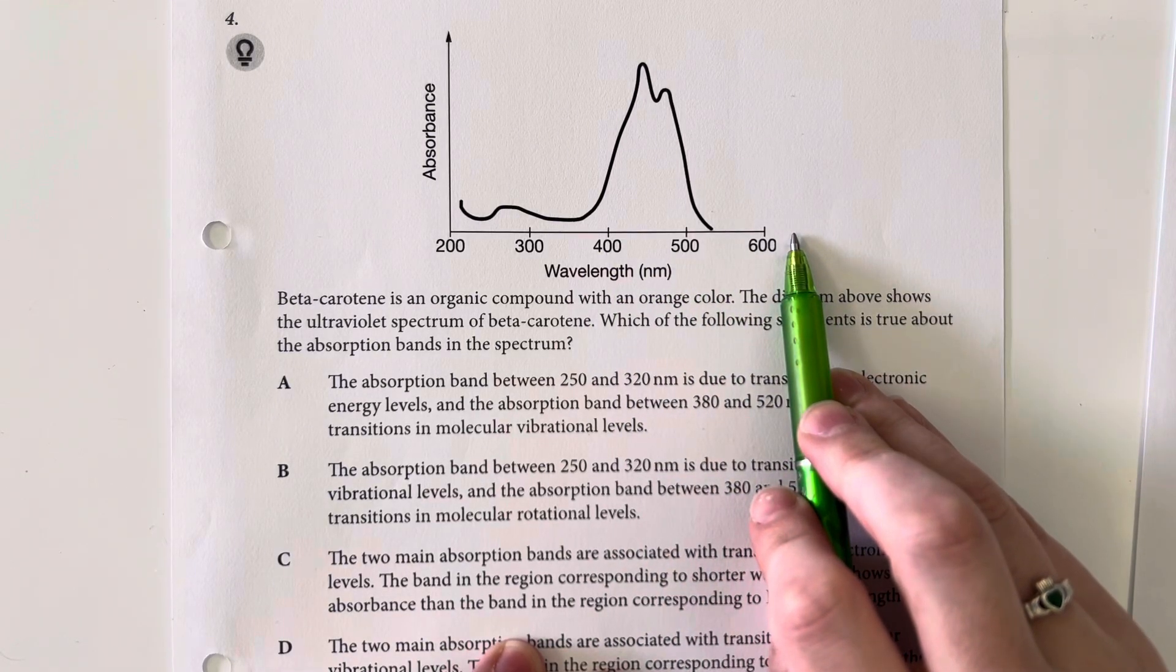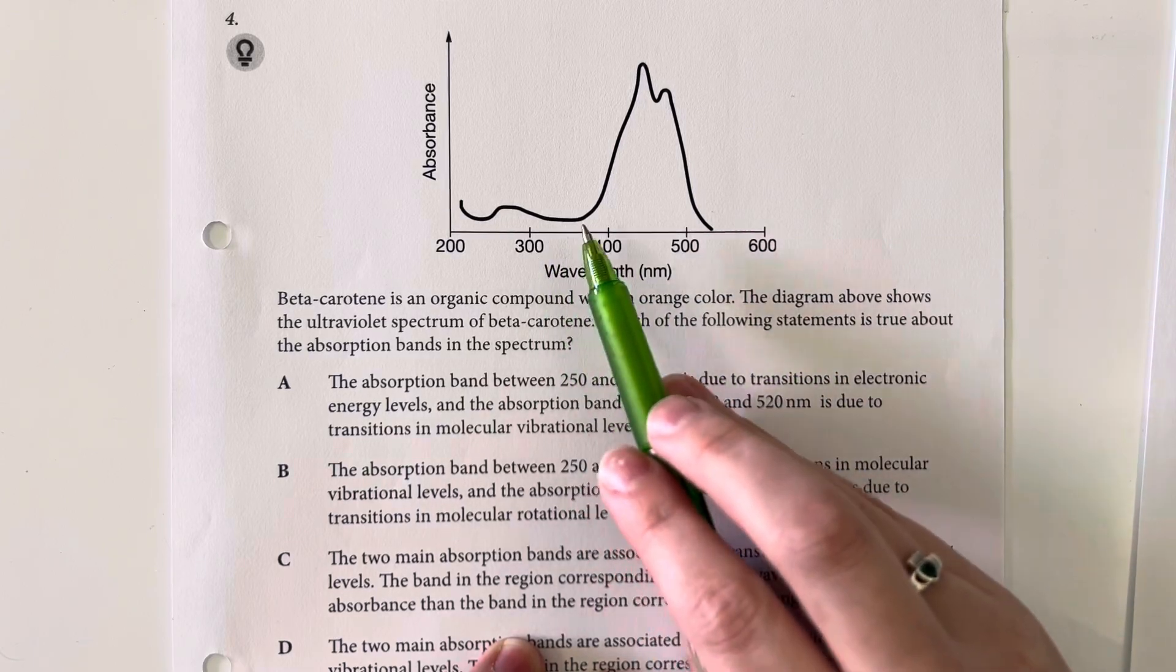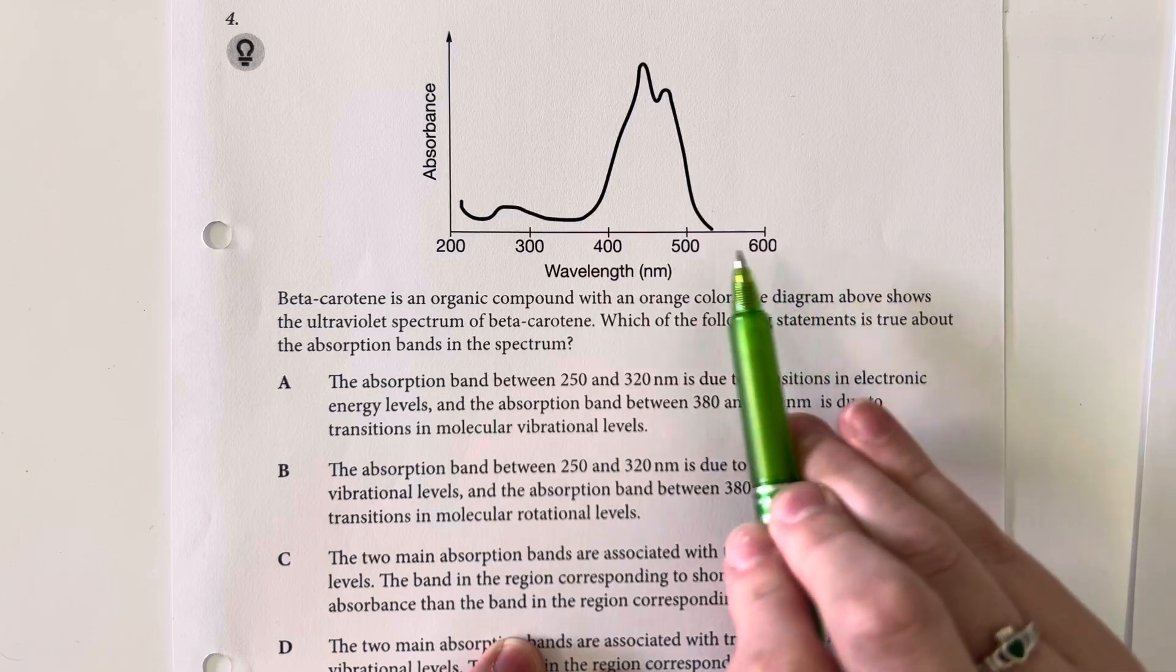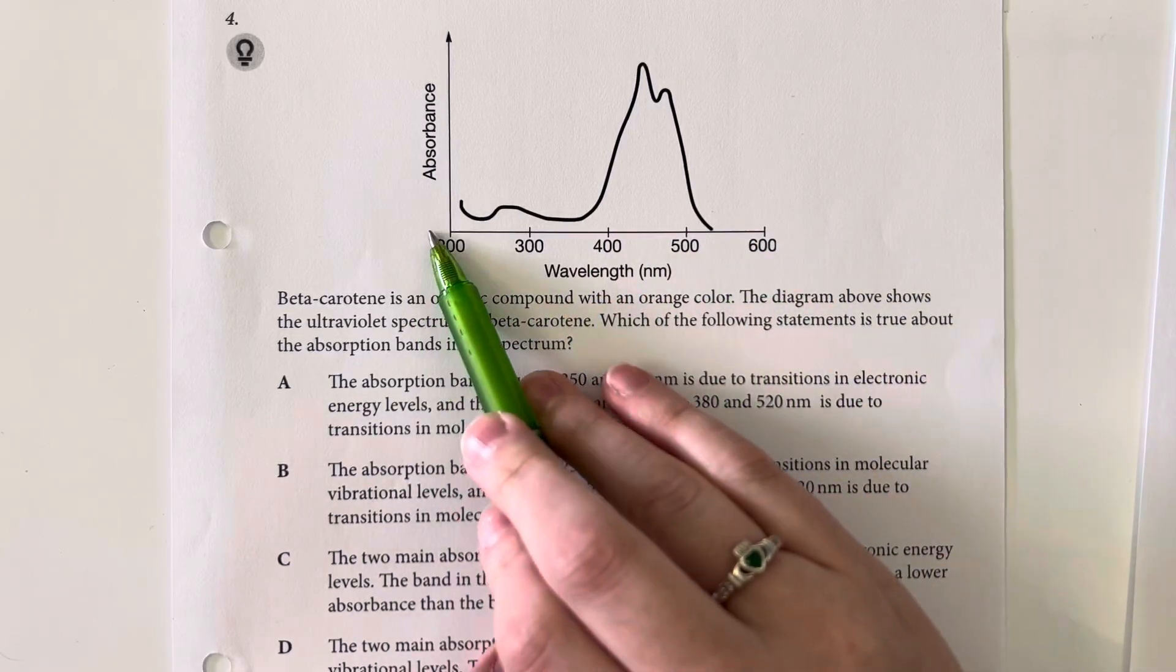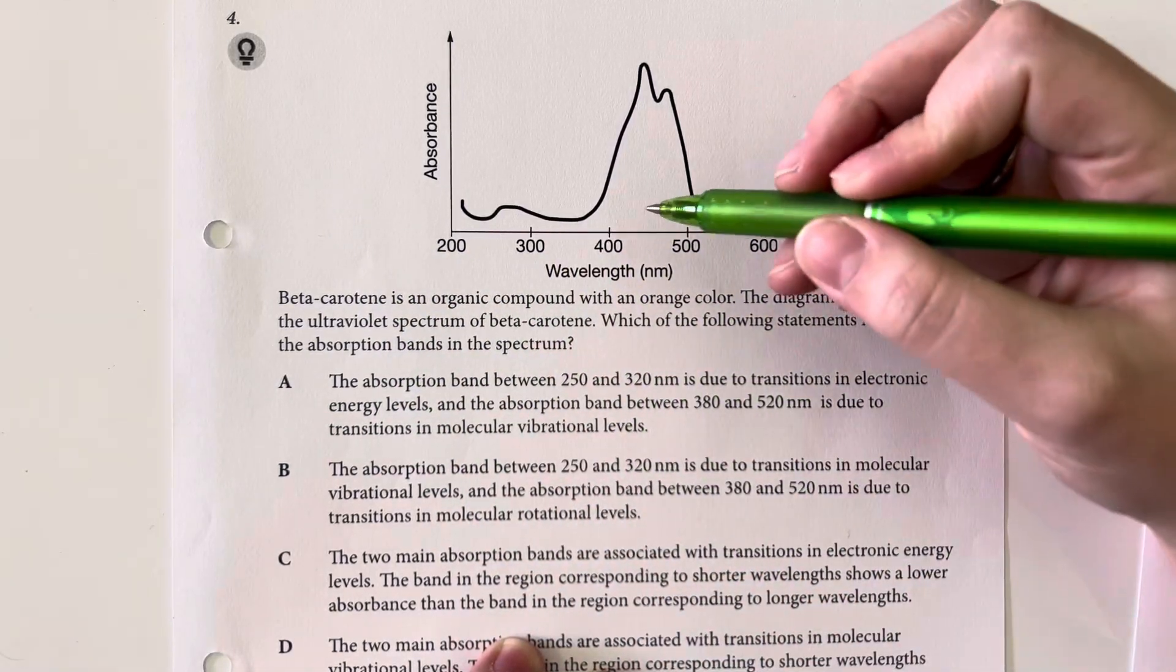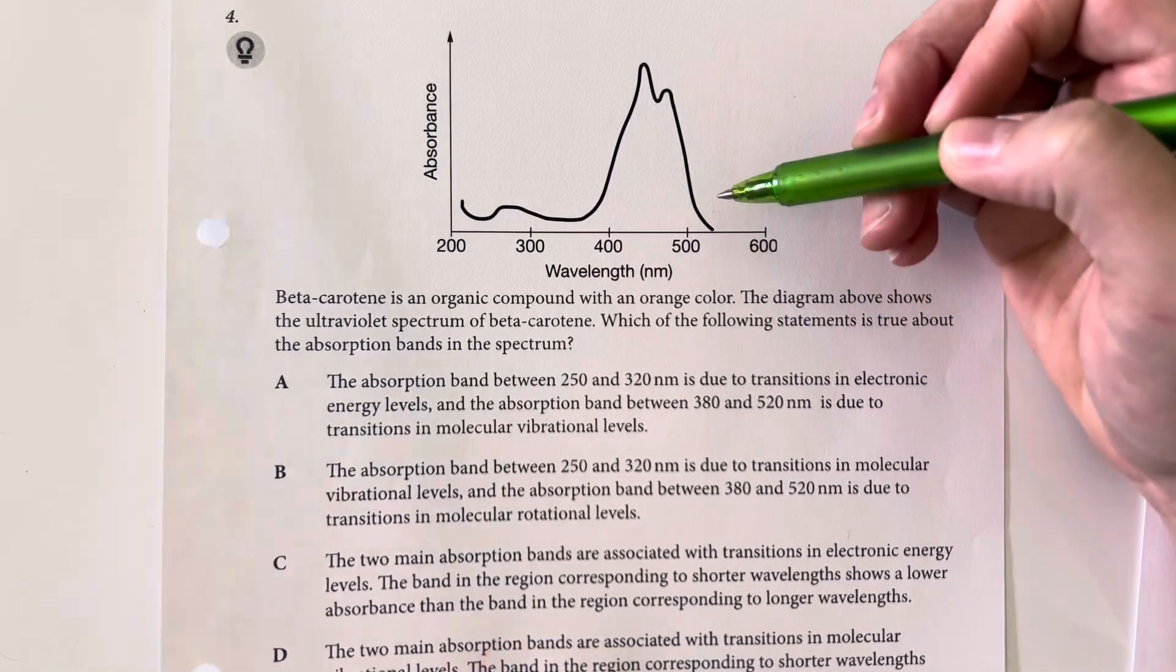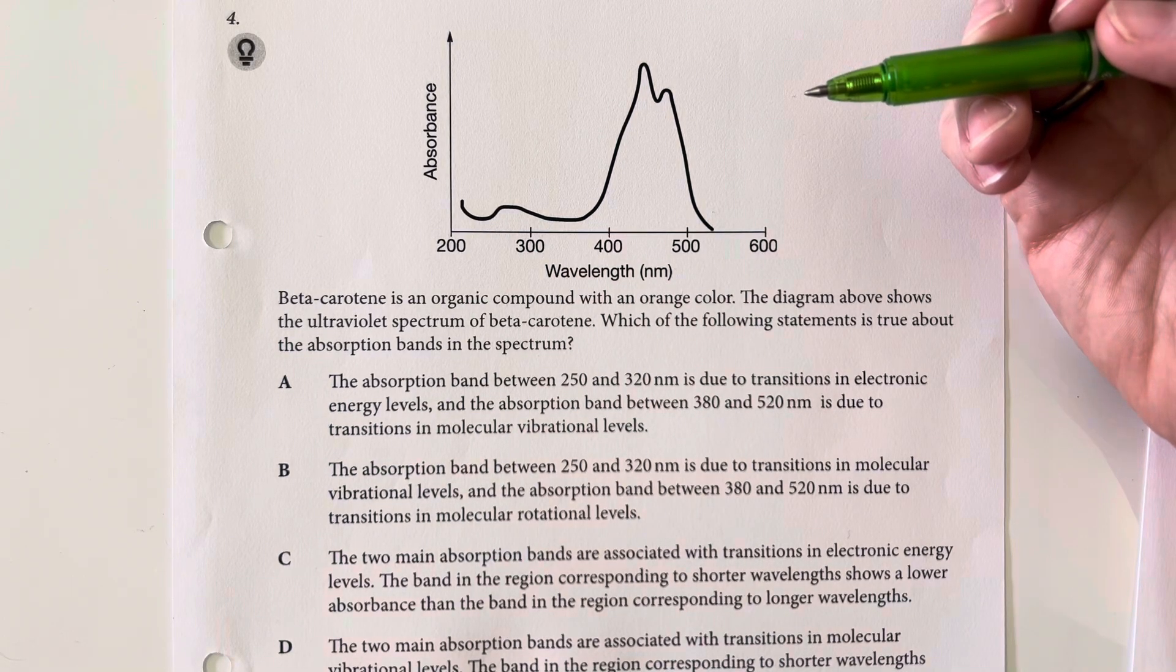And remember that our visible range is typically right in between here, up to 800, where the 800 is our red, and over here would be our purple color. So, we are corresponding with approximately the red-orange section of the color spectrum.